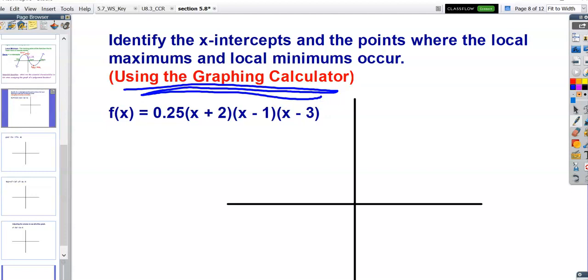First thing we want to look at, where are the x-intercepts? This polynomial function is already written in factored form, so we can look just at the equation itself and figure out where the zeros are. Again, these are the factors, these are not the zeros. To find the zero, you just change the sign of whatever is in the factor.